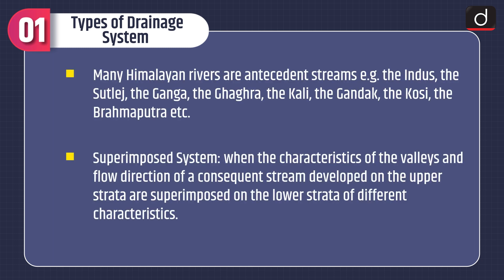Examples of Himalayan antecedent rivers include the Indus, the Satluj, the Ganga, the Ghagra, the Kali, the Gandak, the Kosi, the Brahmaputra, and others.